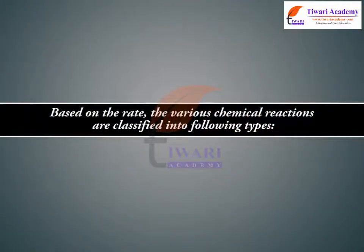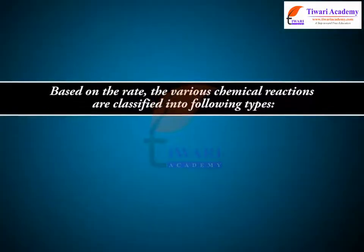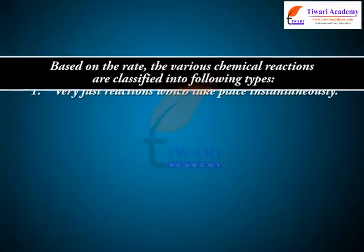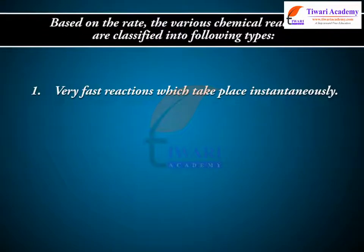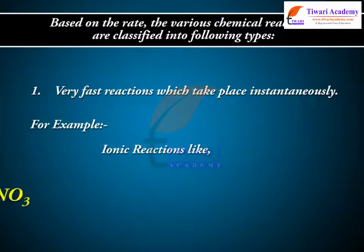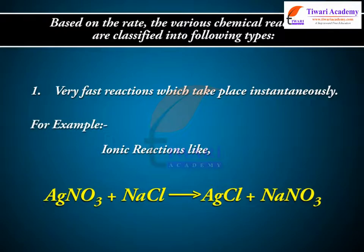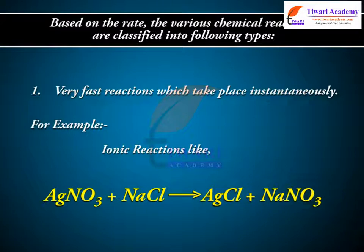Based on the rate, the various chemical reactions are classified into the following types. 1. Very fast reactions, which take place instantaneously. For example, ionic reactions like AgNO3 plus NaCl gives AgCl plus NaNO3.